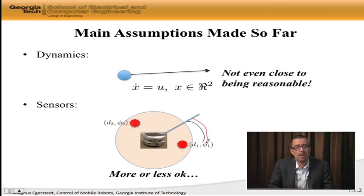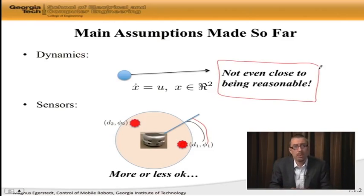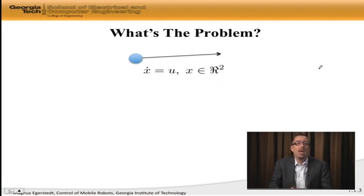The problem is with the dynamics. This is not even close to being reasonable. The Khepera 3 that we've used a lot, it's not at all looking like x dot is equal to u. So, in order for our fable, or our model, or our navigation algorithm, to be relevant to the actual robot, we somehow need to remedy this lack of reasonability.